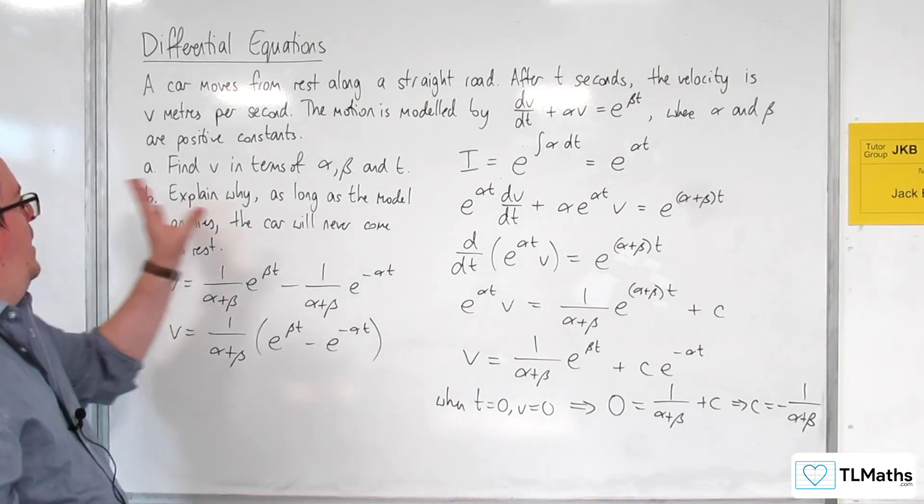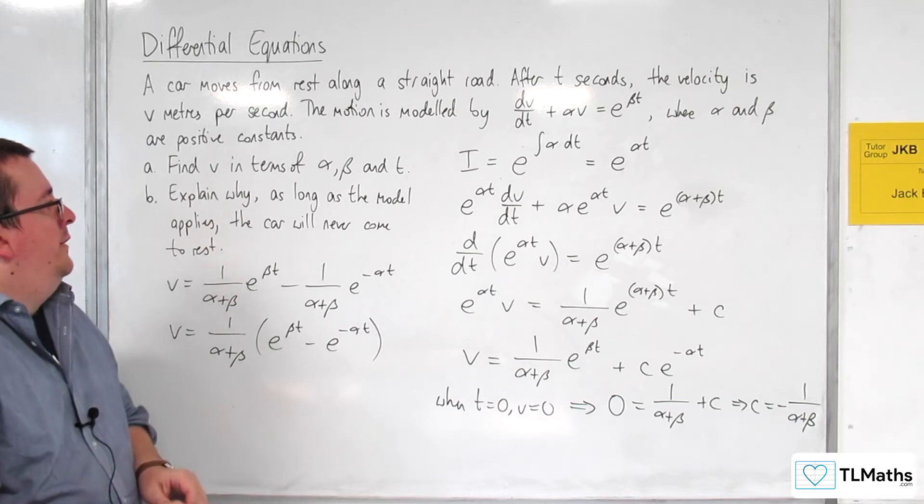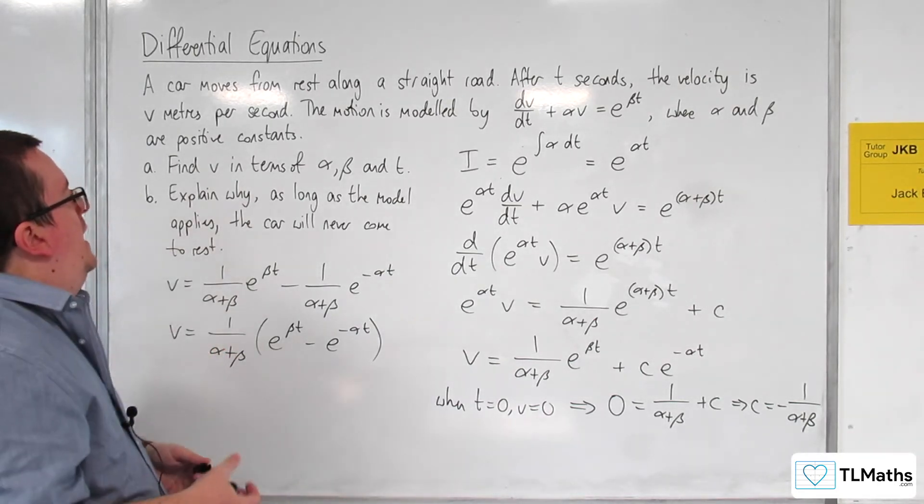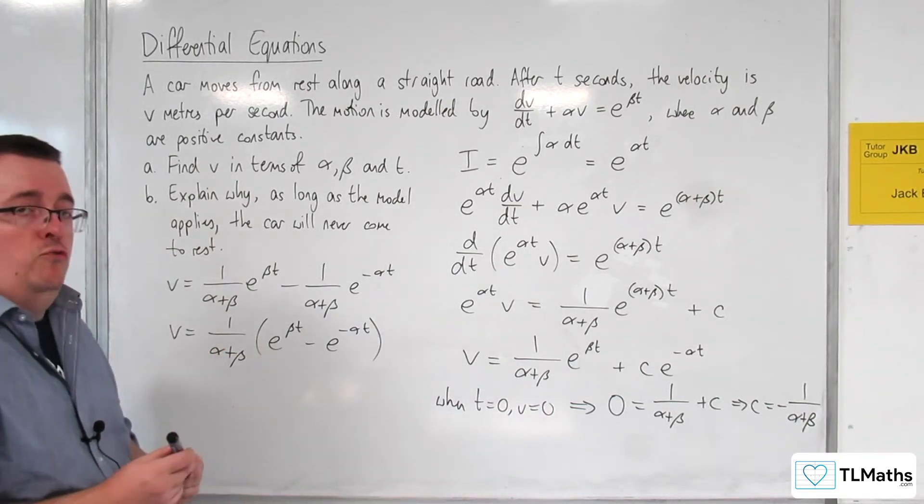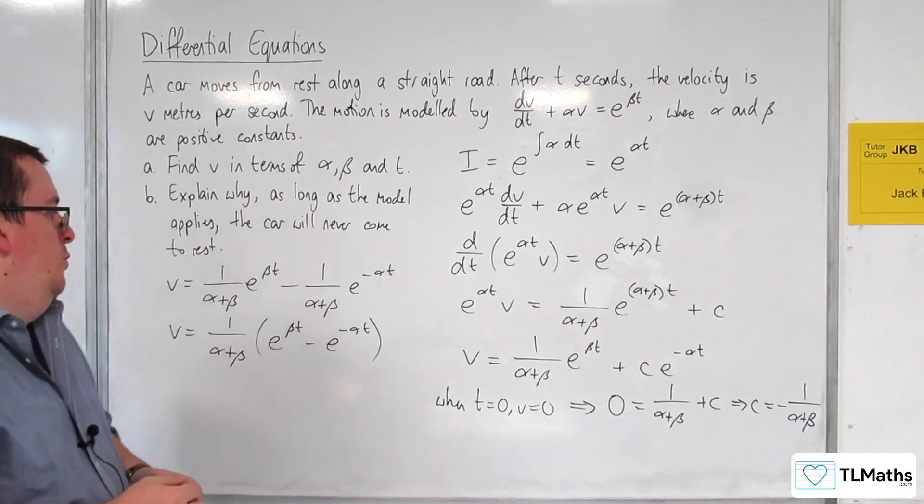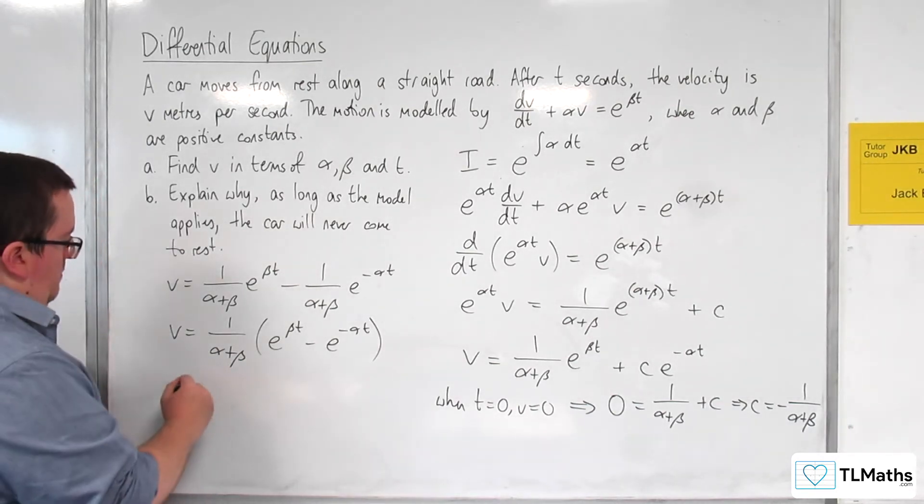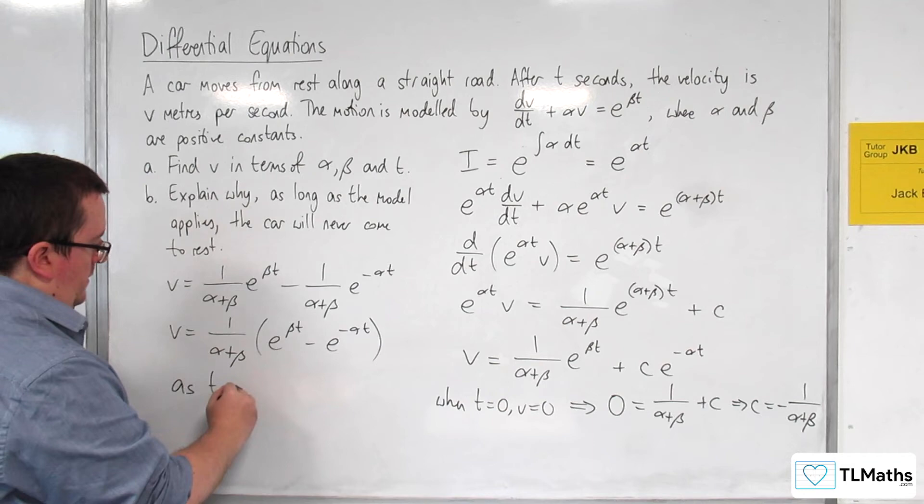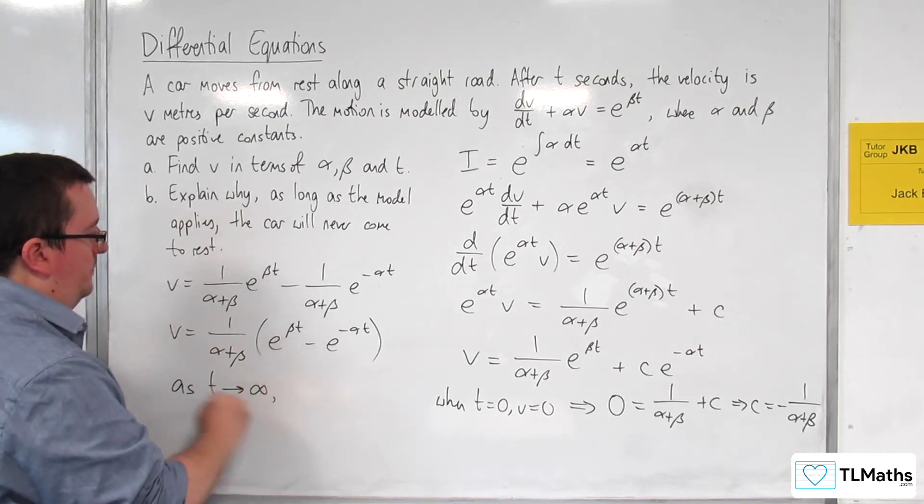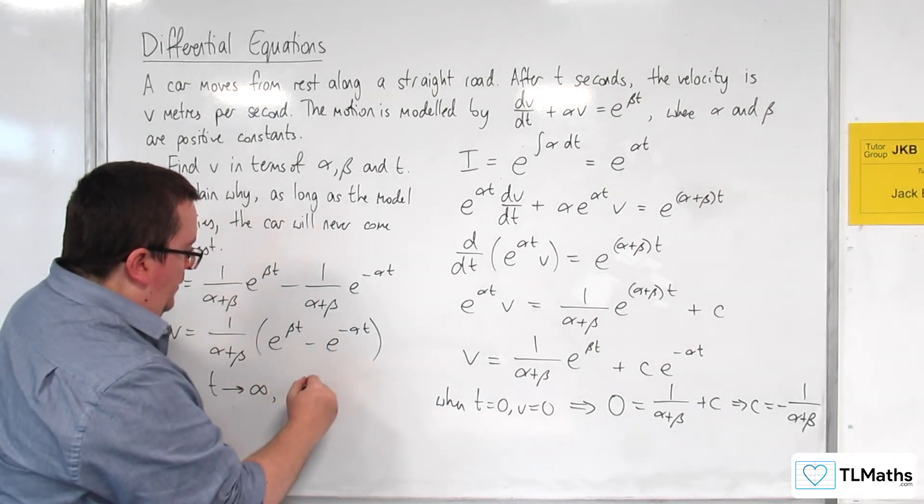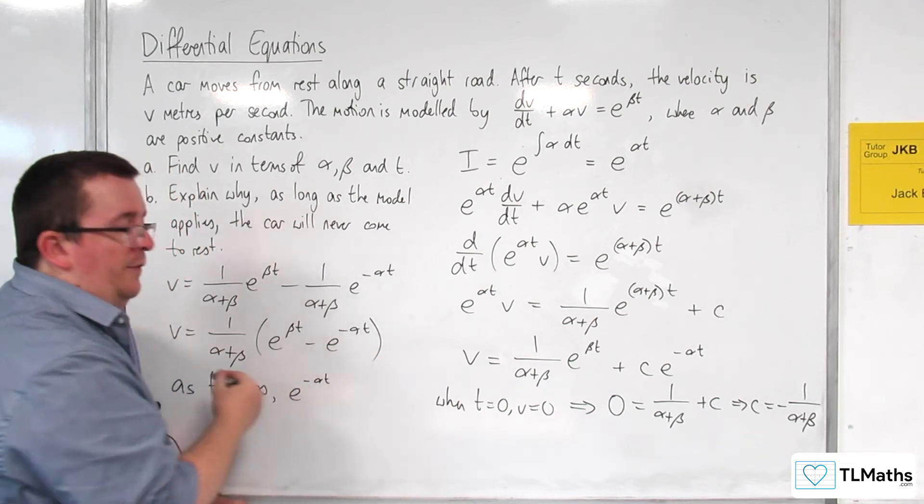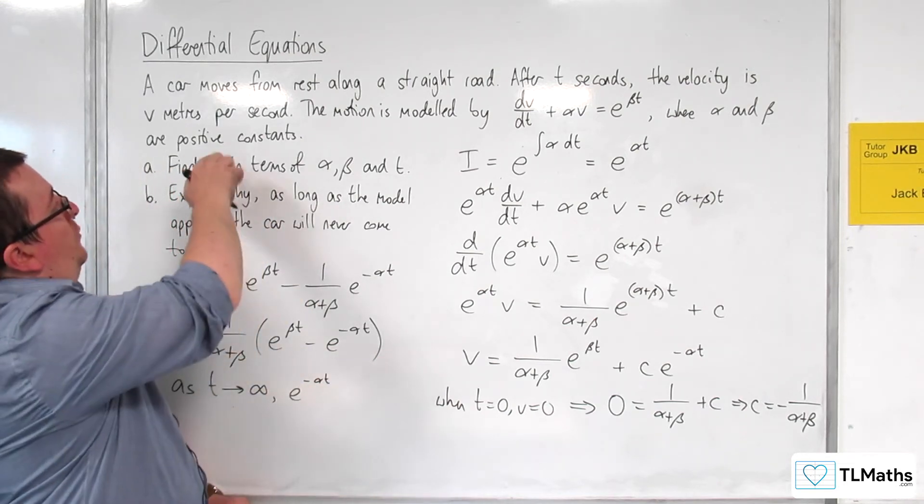Part b, explain why, as long as the model applies, the car will never come to rest. As t tends to infinity, the e^(-αt), because α here is a positive constant as explained in the question.